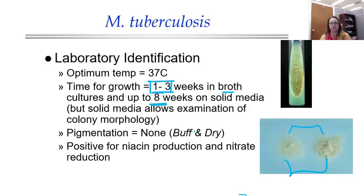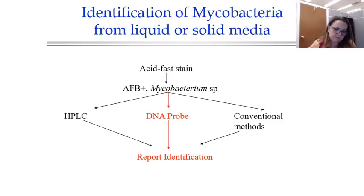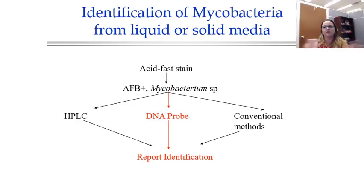There are two biochemical properties used to ID it — niacin and nitrate reduction — but these are traditional methods and aren't really used anymore. Since we don't do biochemical tests for TB — no catalase, coagulase, or oxidase — those tests are just too slow; they can take six to eight weeks because you have to first let it grow out. So really what we need is molecular testing.